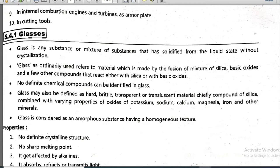Glass is any substance or mixture of substances that has solidified from the liquid state without crystallization. Whenever any metal gets solidified from liquid state to solid state, the first thing which happens is that it will begin making crystals — that process is called crystallization.